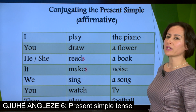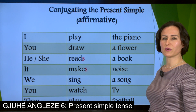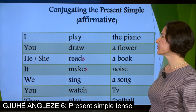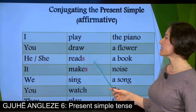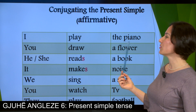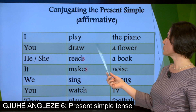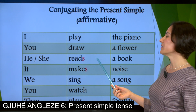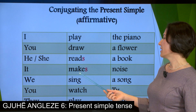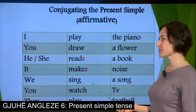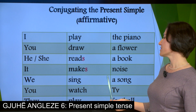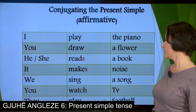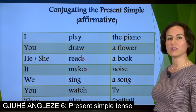Let us conjugate some verbs into the affirmative form. For example: I play the piano. You draw a flower. He or she reads a book. It makes noise. We sing a song. You watch TV. They play football.